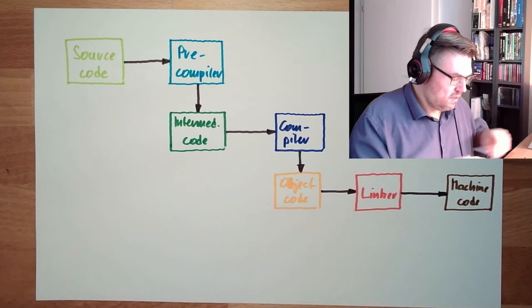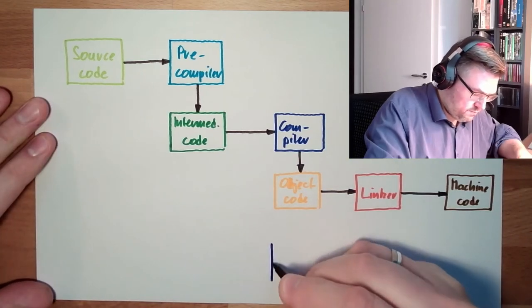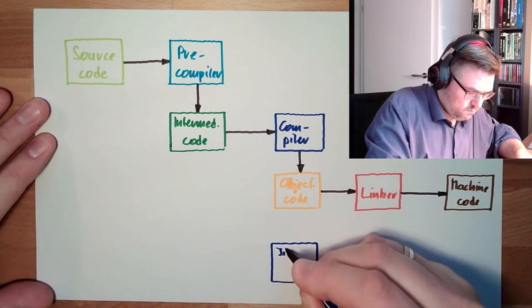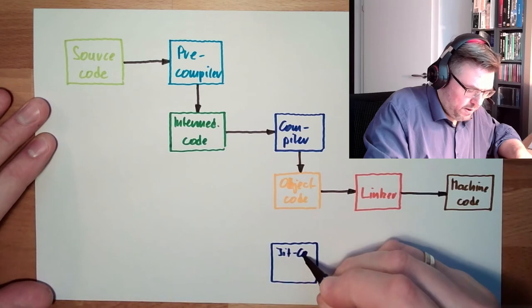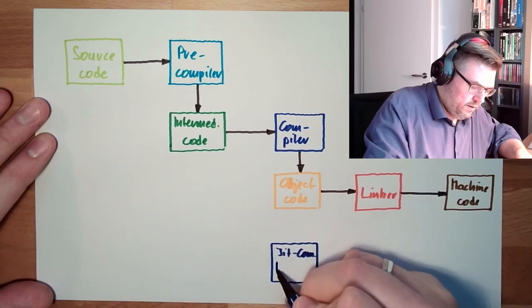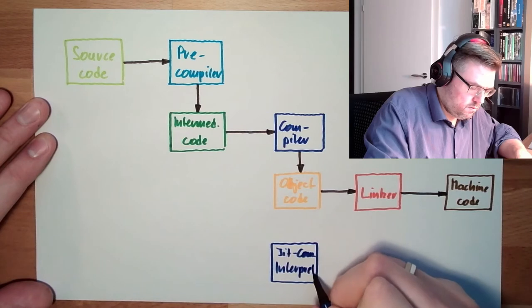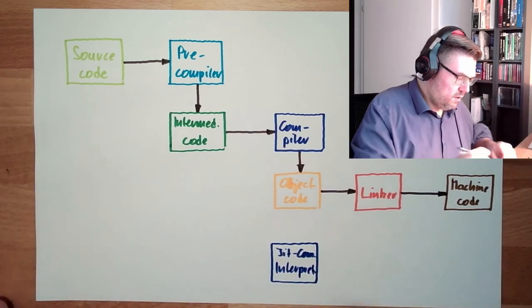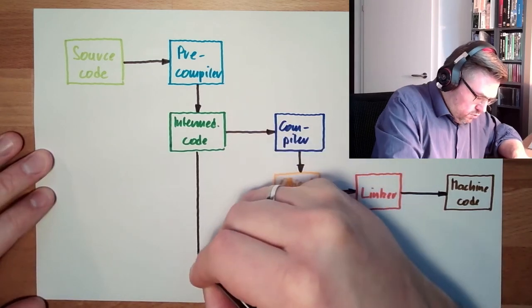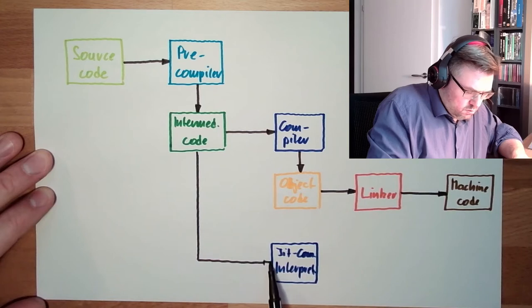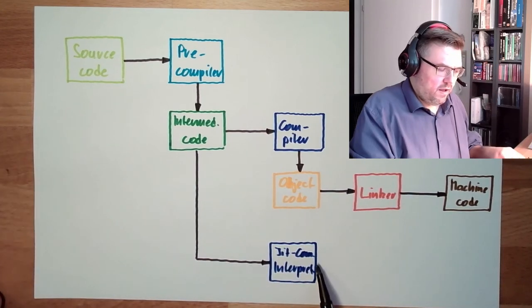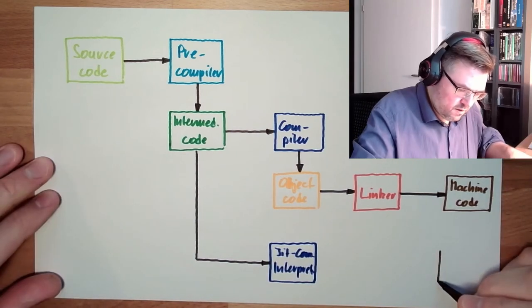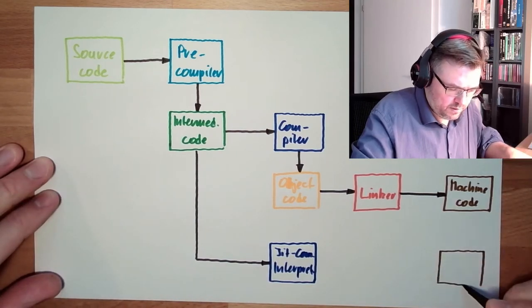So there is a so-called just-in-time compiler. Just-in-time compiler or interpreter. This intermediate code is fed in. And the output of this is directly machine code, which can be used by the platform, by the target platform.